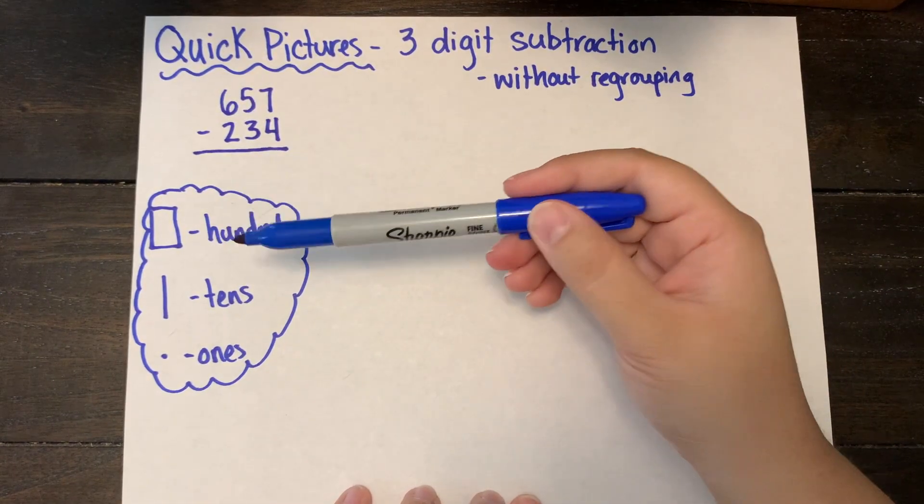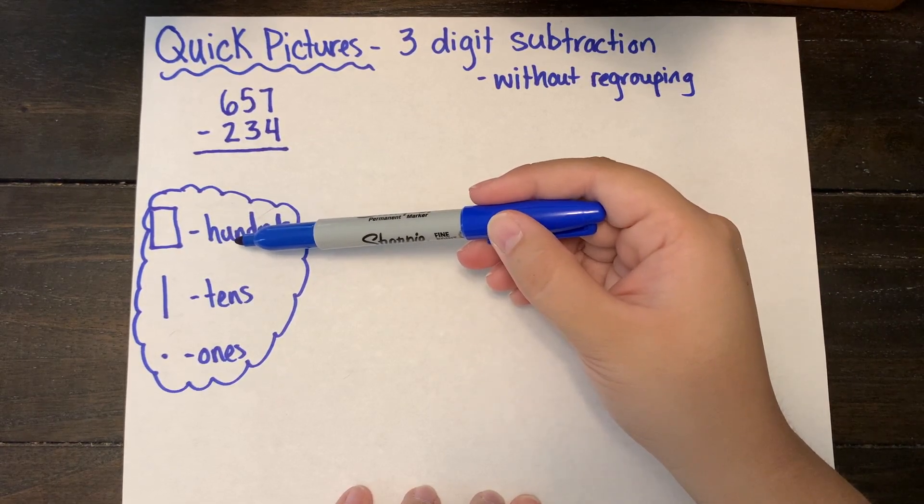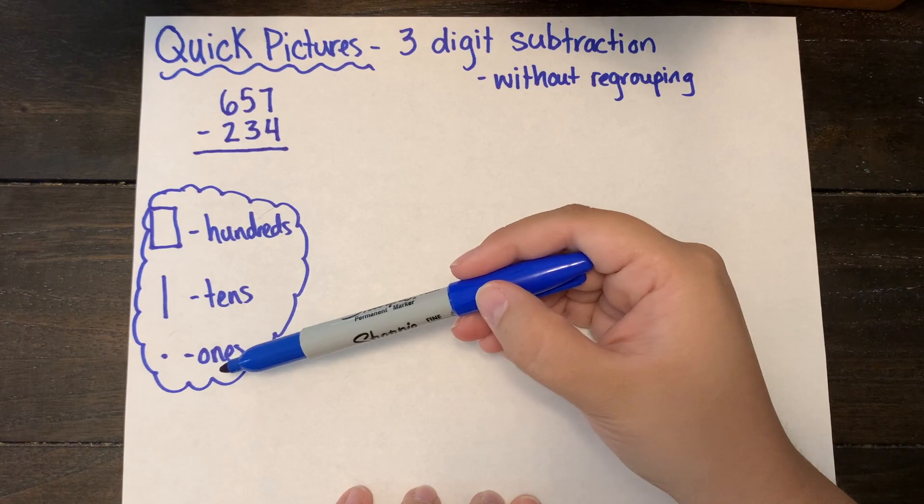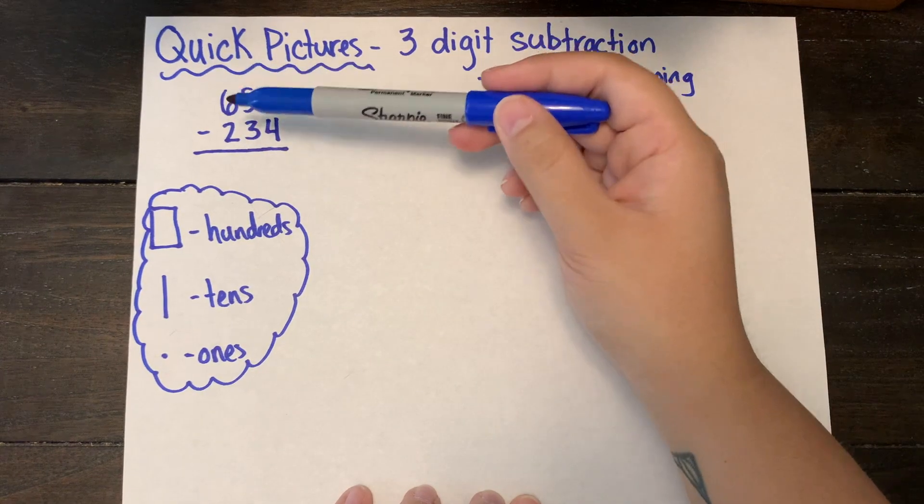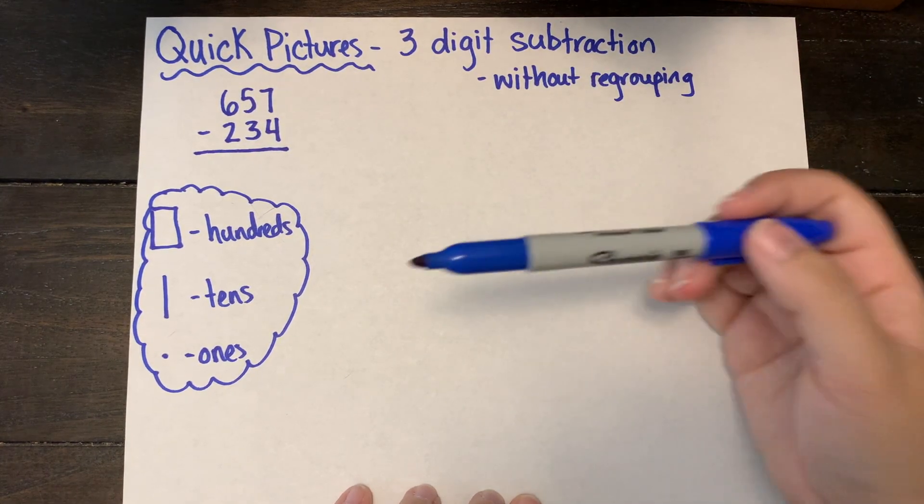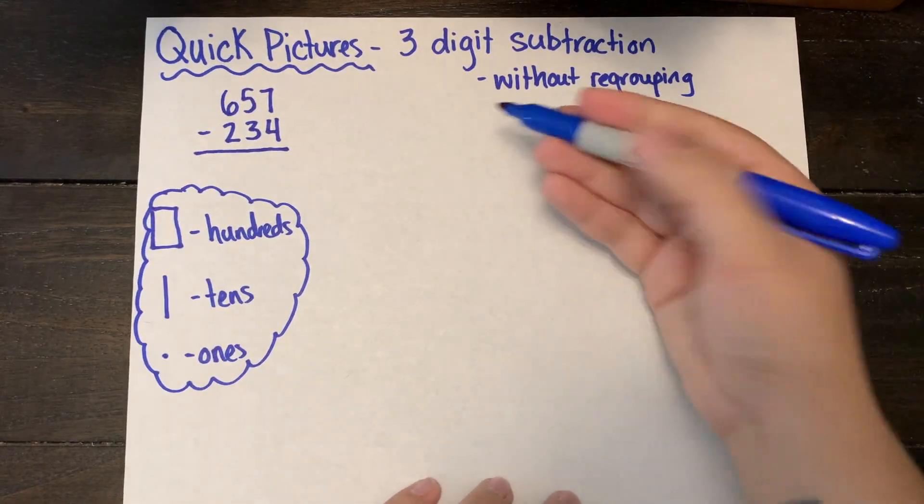We're going to be using our picture representations to solve our problem today since we're using quick pictures. Using our squares as hundreds, our lines as tens, and our dots as ones, we are subtracting 657 take away 234.